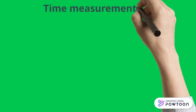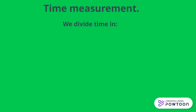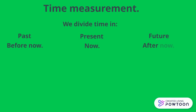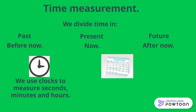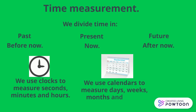Time measurement. We divide time into past — before and now — present — now — and future — after now. We use clocks to measure seconds, minutes, and hours, and we use calendars to measure days, weeks, months, and years.